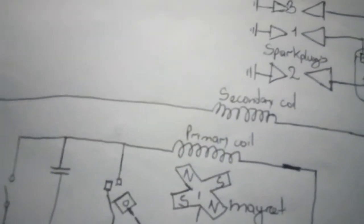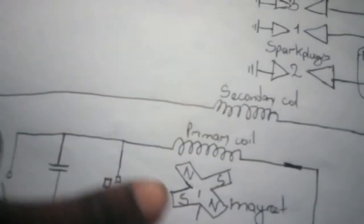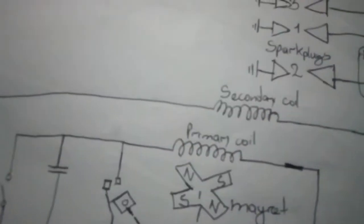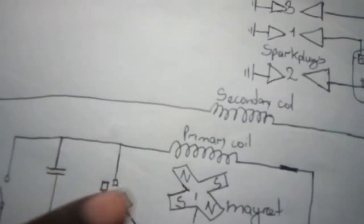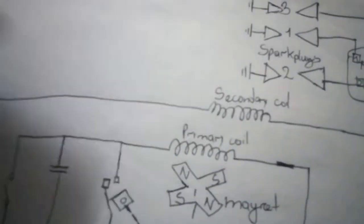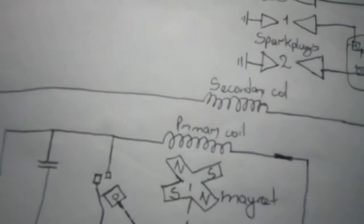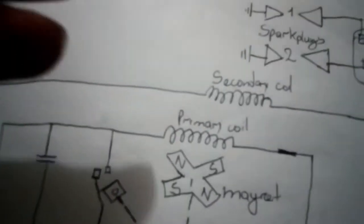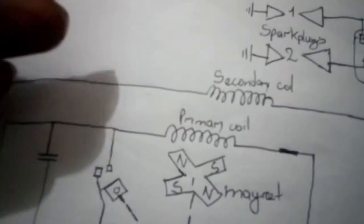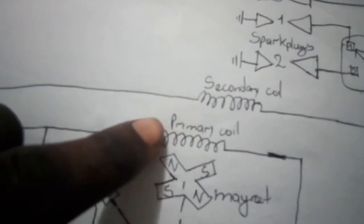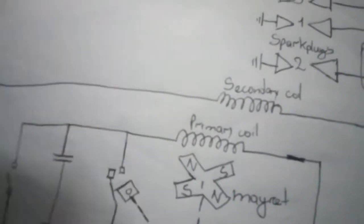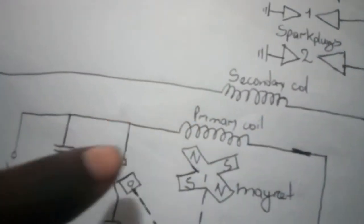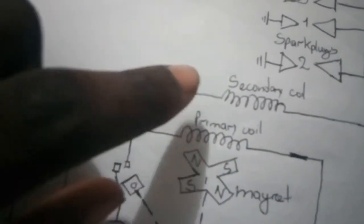But how do we get it in the secondary coil? This is where you have to understand transformers. This coil sets up its own magnetic field because of the voltage in it. Now the magnetic field is going to cut the secondary.